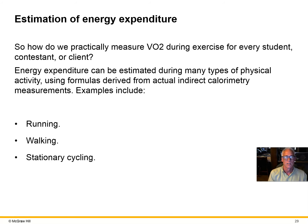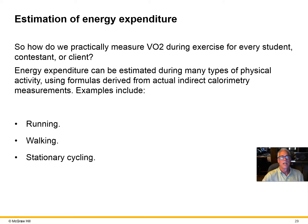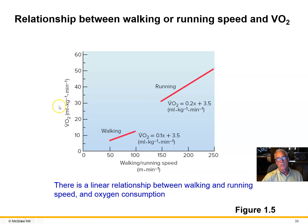Even more practical: many experiments have been done on thousands of subjects running, walking, cycling, and stepping. What we found is that we can create simple equations from all that data, allowing us to take a person's weight and the speed at which they're walking, running, or cycling and figure out pretty accurately their oxygen consumption without even having to do indirect calorimetry. It's been shown that the faster you walk, the more oxygen is consumed — and it's a linear relationship. If you double the speed, you double the oxygen consumed. Same thing with running.